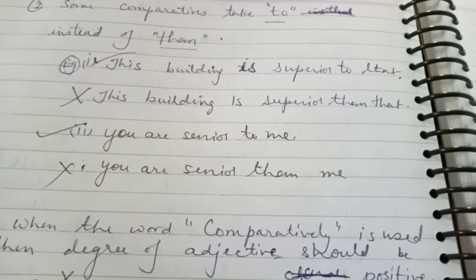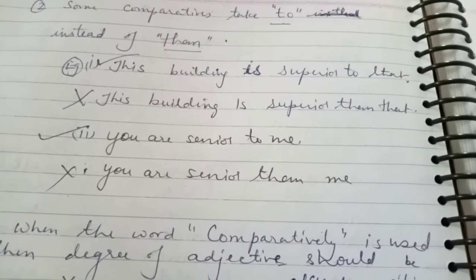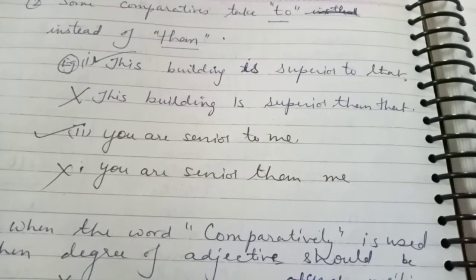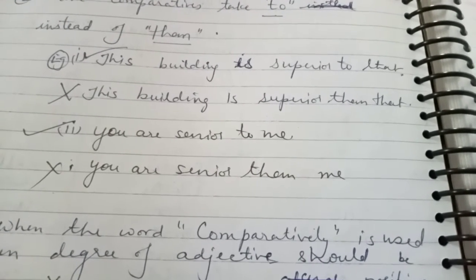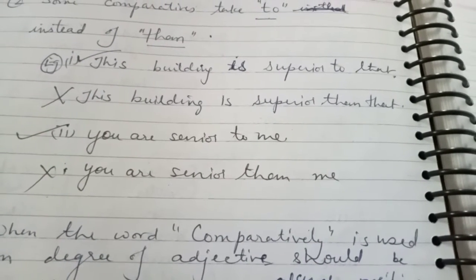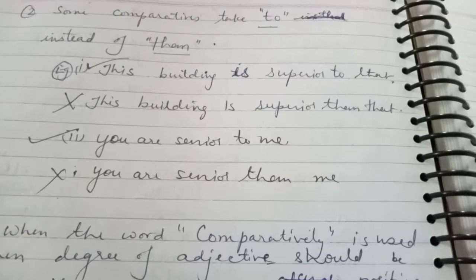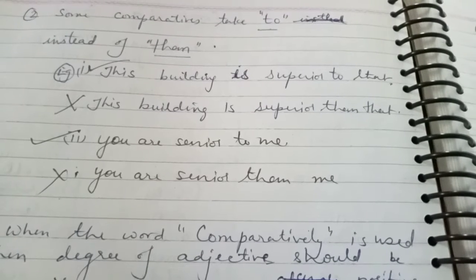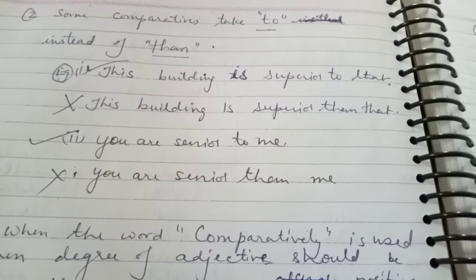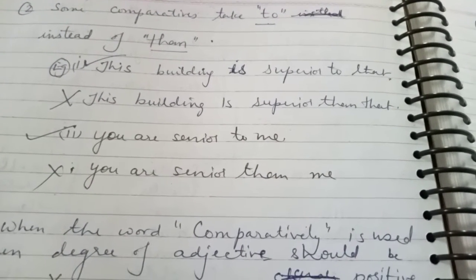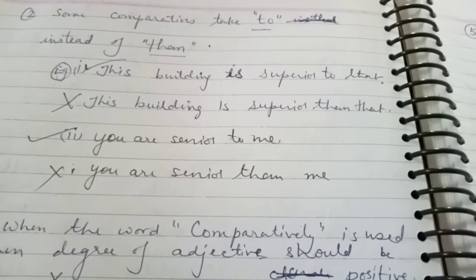You are senior to me — we will not write 'senior than me.' Here is the hint: if the adjective ends in I-O-R, like junior, senior, superior, inferior — you have to use 'to' instead of 'than.'